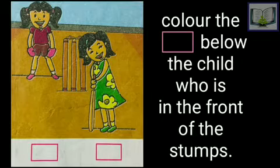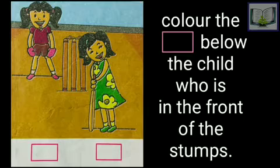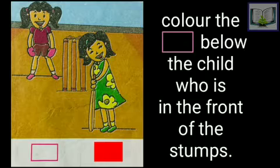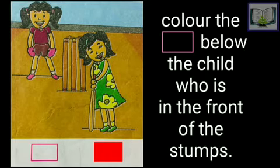Let's see another example — color the square below the child who is in front of the stump. So who is in front of the stump? Right — she is in front of the stump, and the other girl is behind the stump.